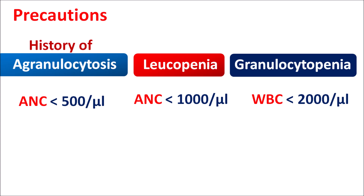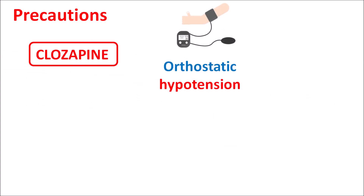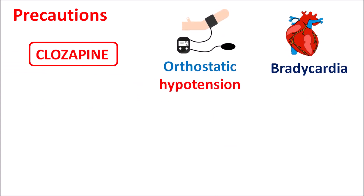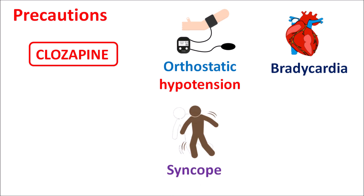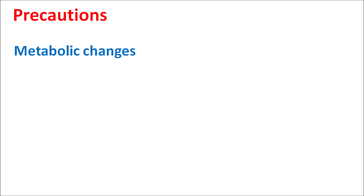Clozapine can produce symptoms such as orthostatic hypotension, bradycardia, and syncope. Particularly at very high doses, it can also produce cardiac arrest. That is why clozapine should be initiated at a very low dose — starting at 12.5 mg — and the dose should be slowly titrated to prevent any sudden damage to the cardiac system.